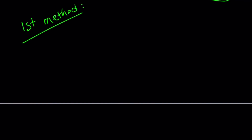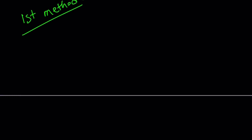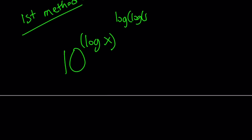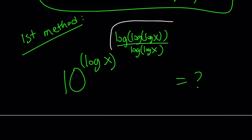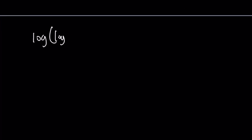Let's take a look at the first method. We have 10 to the power log x to the power log log log x divided by log log x — our gigantic, monstrous, scary expression. You already know the answer. We're going to focus on the exponent like before: log log log x divided by log log x.